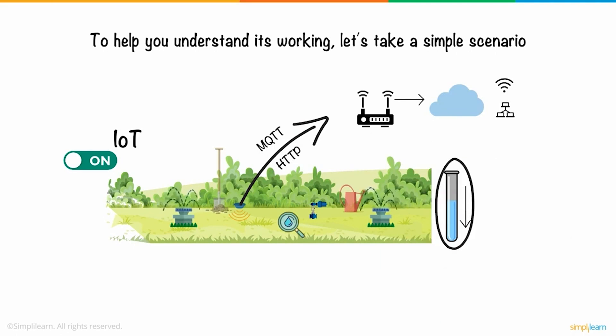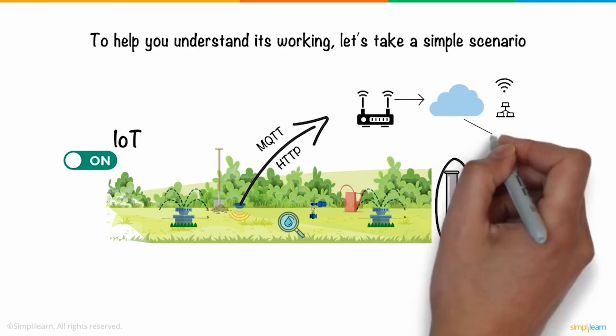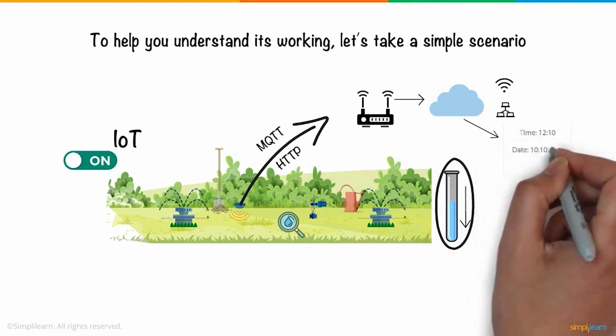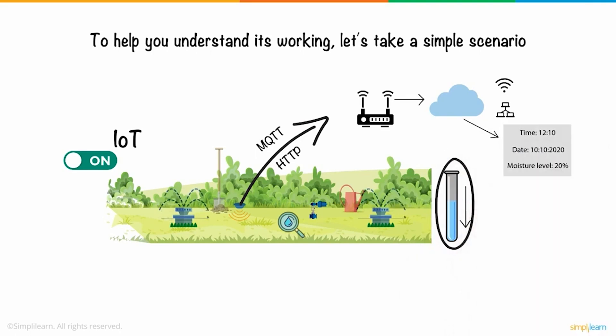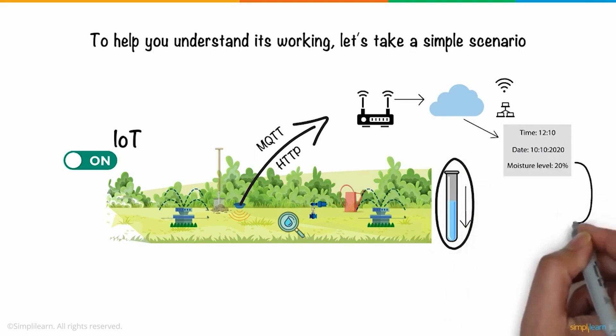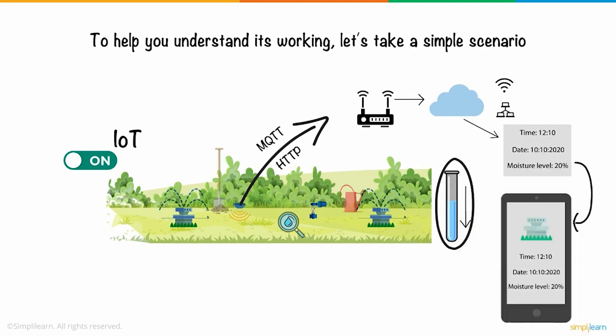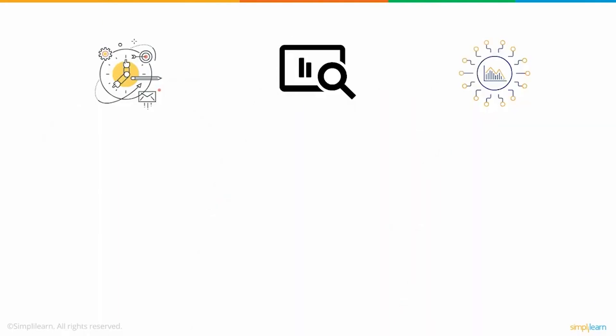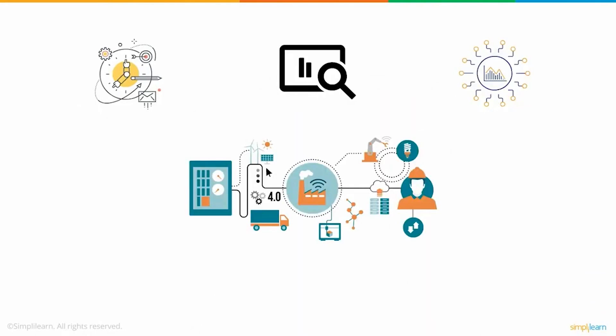With the information stored in the cloud, a detailed analysis — like the time of day the sprinkler was turned on, the rate at which the moisture in the soil reduces, and so on — can be done and the report could be sent over to you on your smartphone via an app. With improved response, monitoring, and analytical capabilities, IoT is being adopted in almost all industries and domains, opening doors to endless applications.